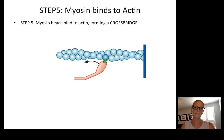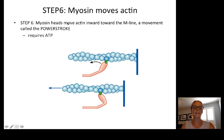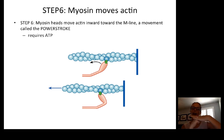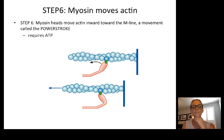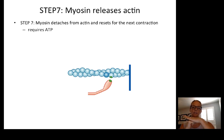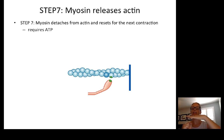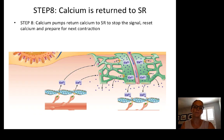Step six: the myosin heads move the actin. They bind to the actin and then, like a ratchet, move the actin inward toward the M-line. This movement is called the power stroke, and it requires ATP. The last step is that myosin detaches from the actin — the myosin was bound in the cross-bridge, moved the actin in a power stroke, and now must detach and reset. That detaching and resetting also requires ATP. After that, calcium is returned to the sarcoplasmic reticulum via calcium pumps, stopping the calcium signal and preparing for the next contraction.